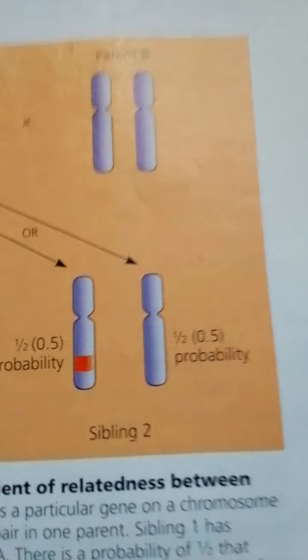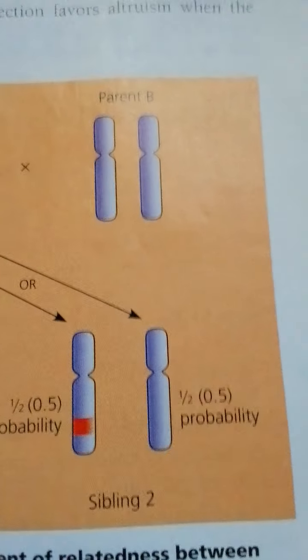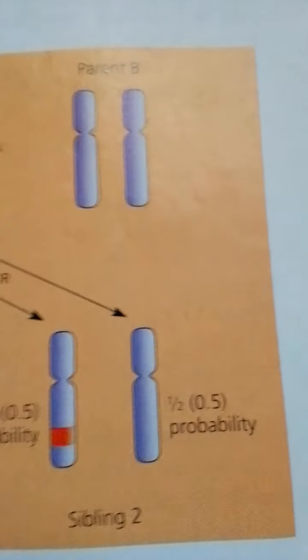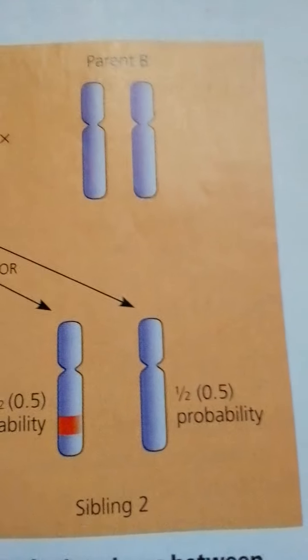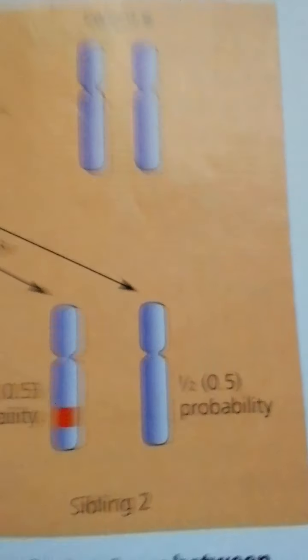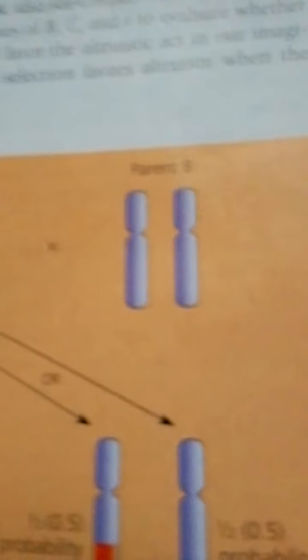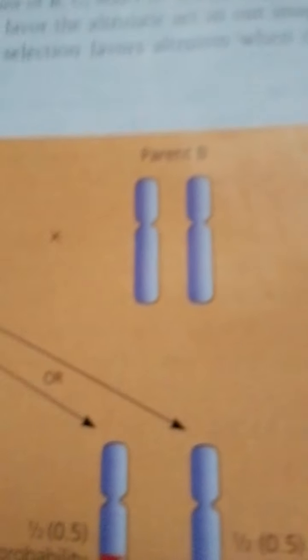C equals 0.1. We now know that B equals 2.0 and C equals 0.1 for this hypothetical act of altruism. But what about R? The coefficient of relatedness equals the probability that, if two individuals share a common parent or ancestor, a particular gene present in one individual will also be present in the second individual.